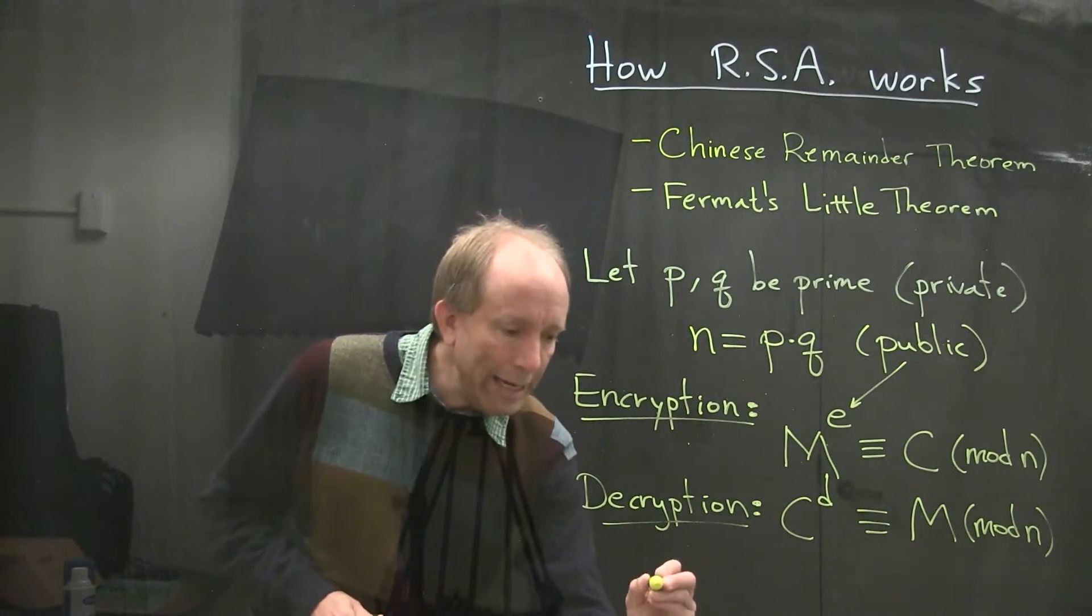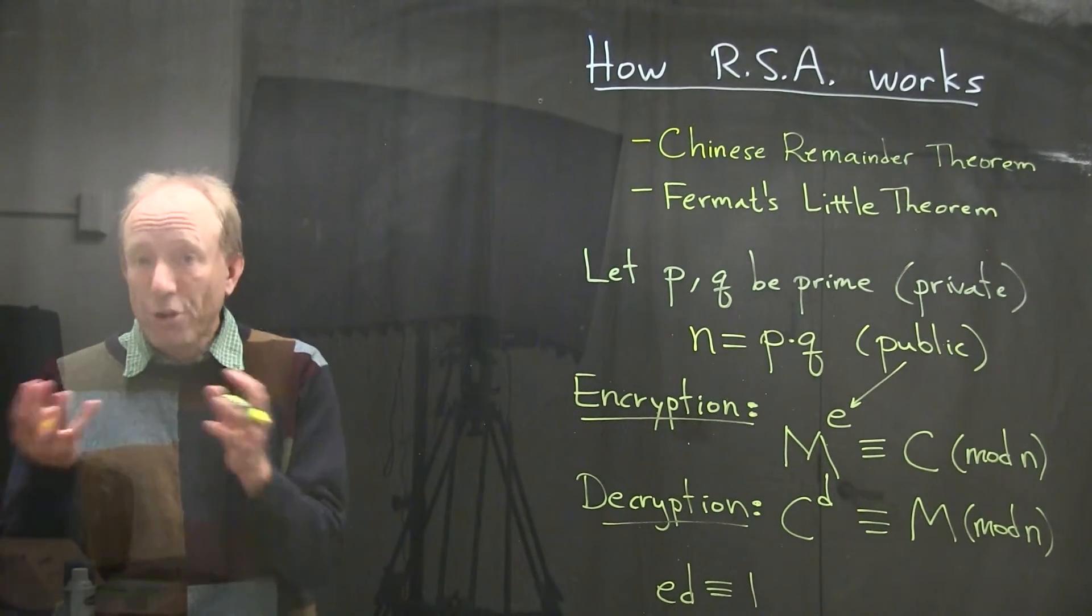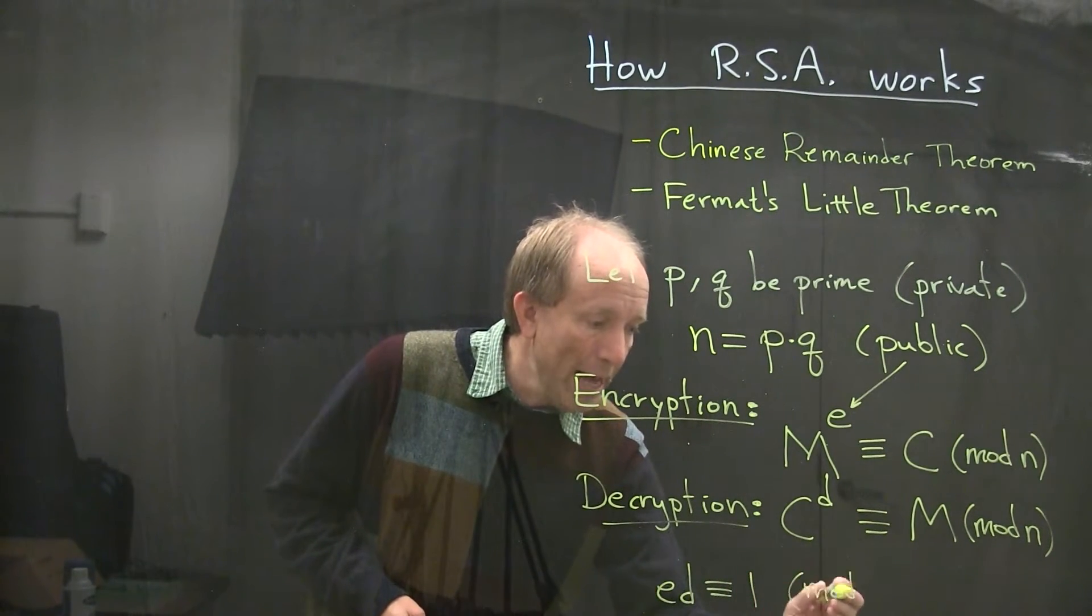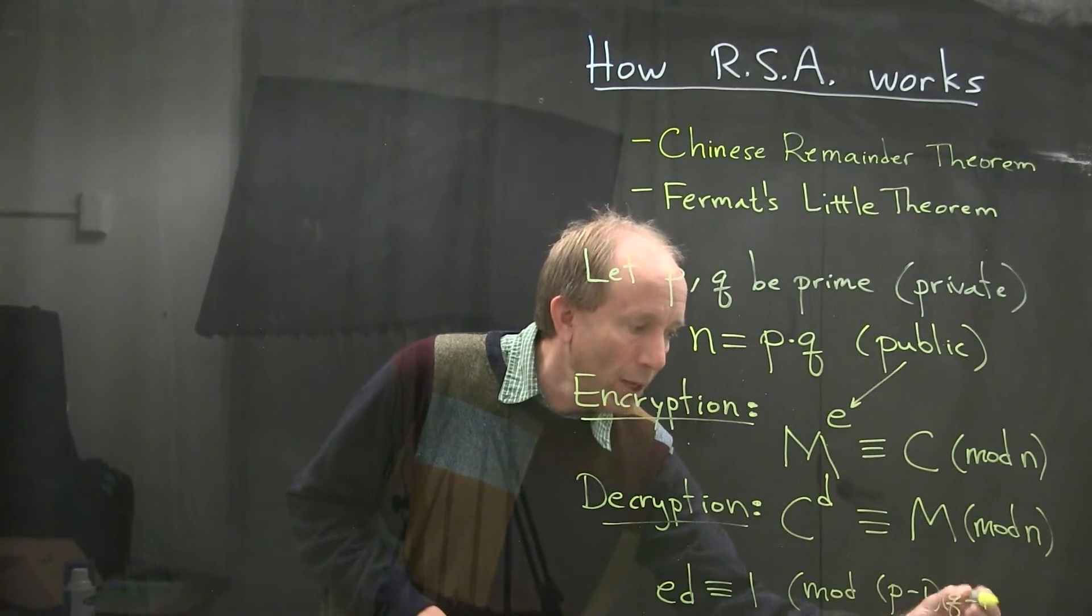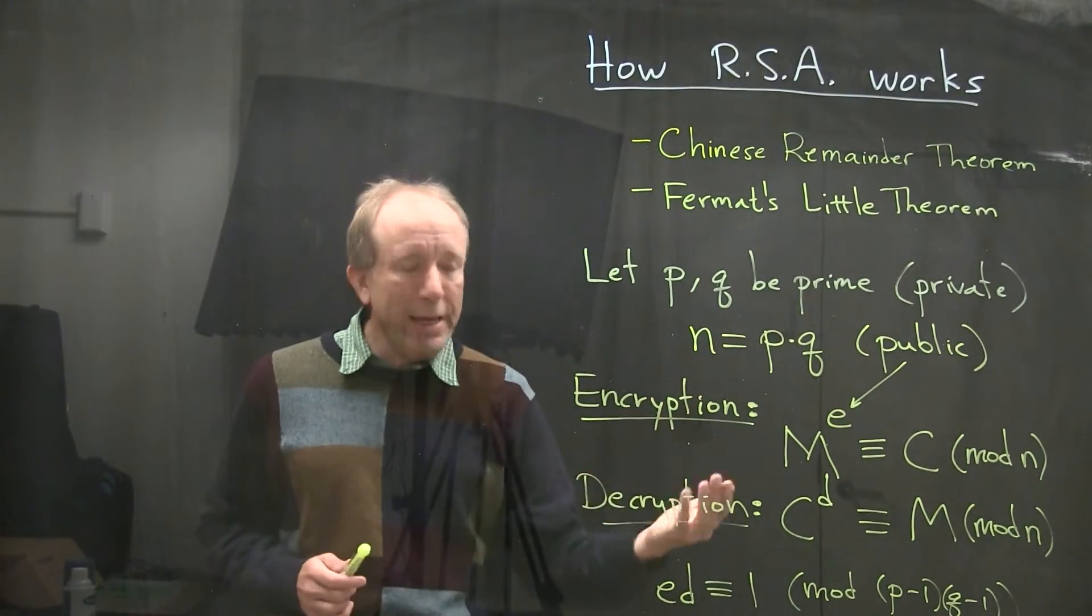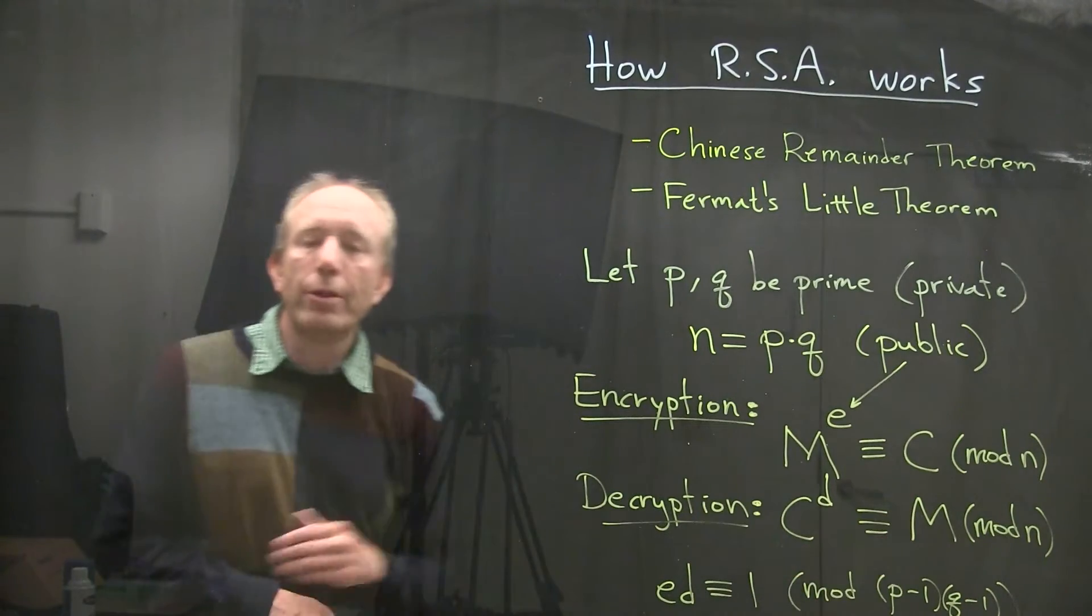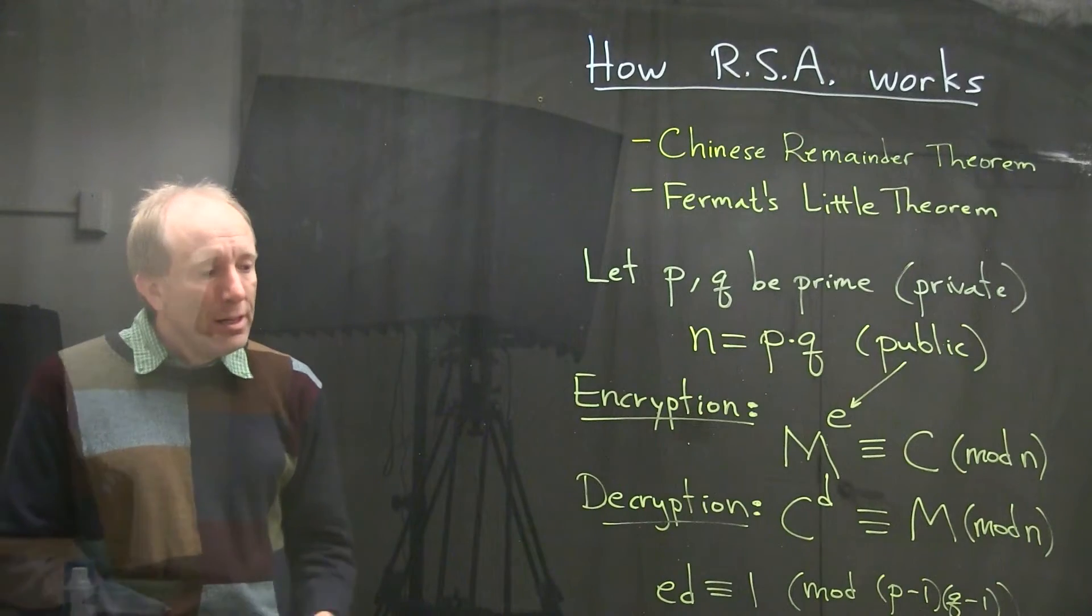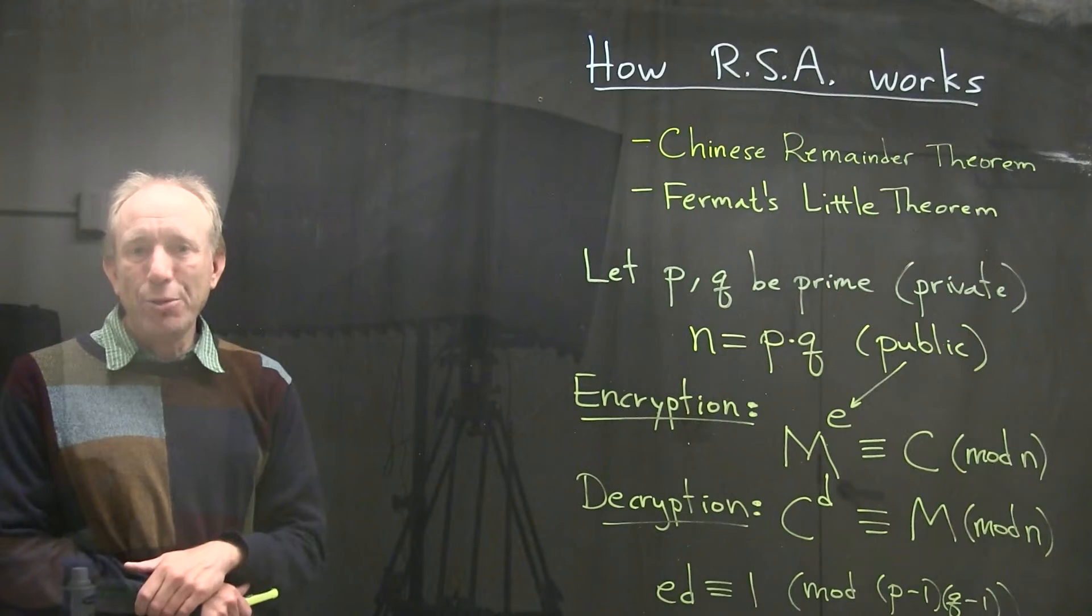It turns out that E times D, they have to cancel each other out. Encryption and decryption have to sort of undo each other. But this is not in mod N. This is actually in modulo P minus 1 times Q minus 1. Only the person who knows what P and Q are will be able to have the right modulus down here in order to solve for D. So we're going to solve for D. We can only do that if we know what P and Q are.